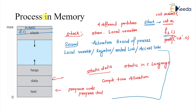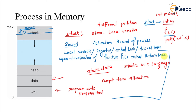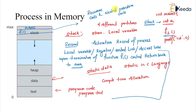Upon termination of function f1, control returns back to main. So recursive calls and nested procedure calls are implemented using the stack. In summary: the text segment is for the code, the data segment is for static data, and the stack is for recursive and nested procedure calls.